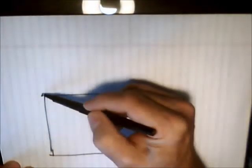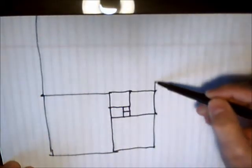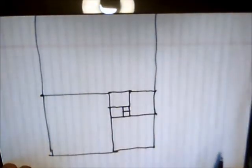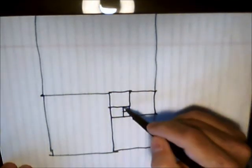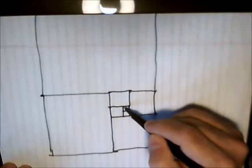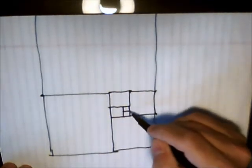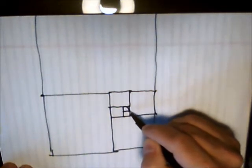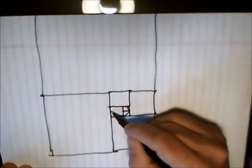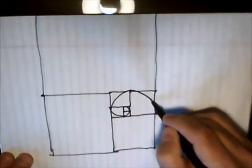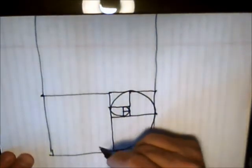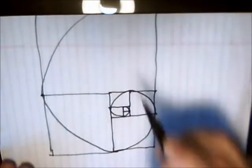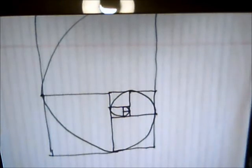The next square would be, if I had room on the paper, 21 by 21. Here's the cool part: if I put my pinpoint at the corner of the first square and connect it to the opposite corner with a quarter of a circle, and keep doing that as I work around — here's the magic — we generate the Fibonacci spiral.